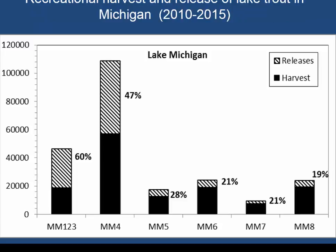To place the importance of hooking mortality into context, this graph shows recreational harvest and release of lake trout in Lake Michigan from 2010 and 2015. Each bar represents total catch per management unit, with northern units on the left and southern units on the right. The hashed portion represents the fraction released by recreational fisheries — about 20 percent in southern Lake Michigan, going up to 60 percent in northern Lake Michigan, largely driven by size limit regulations.